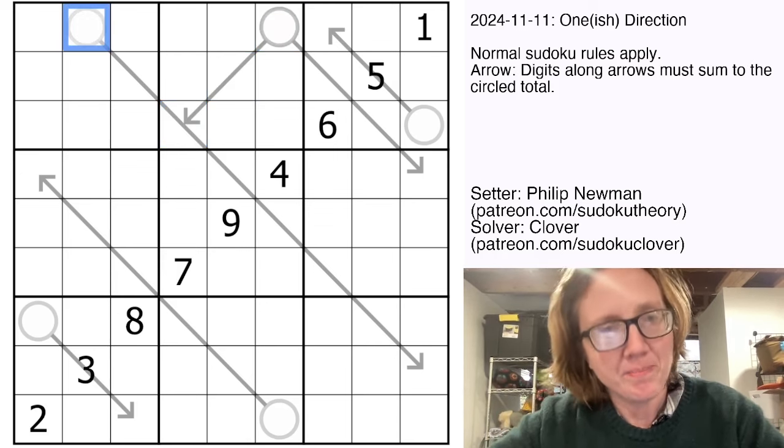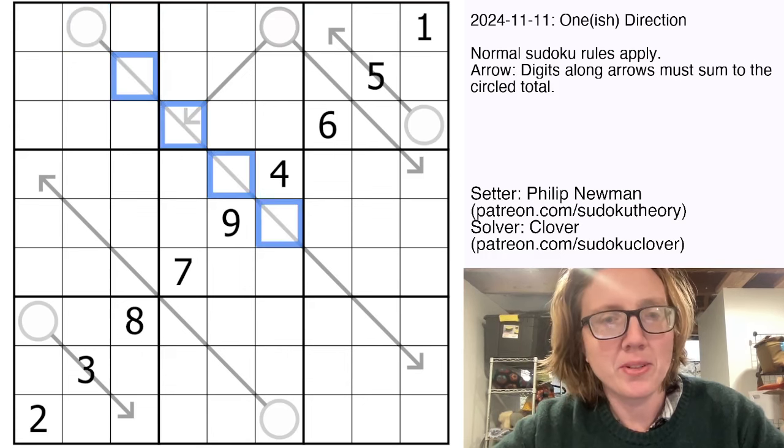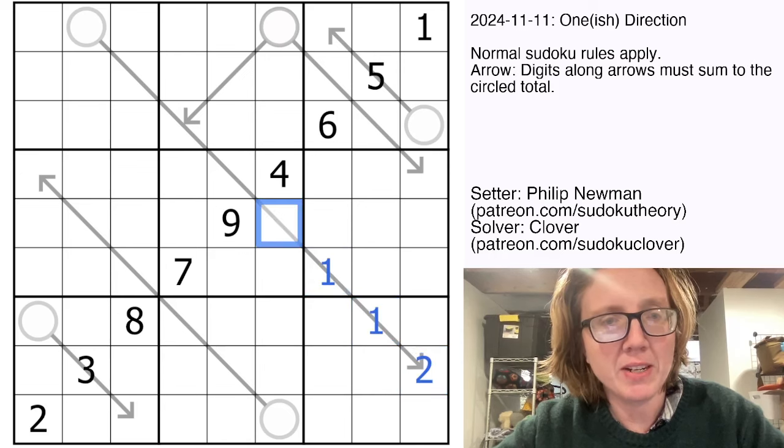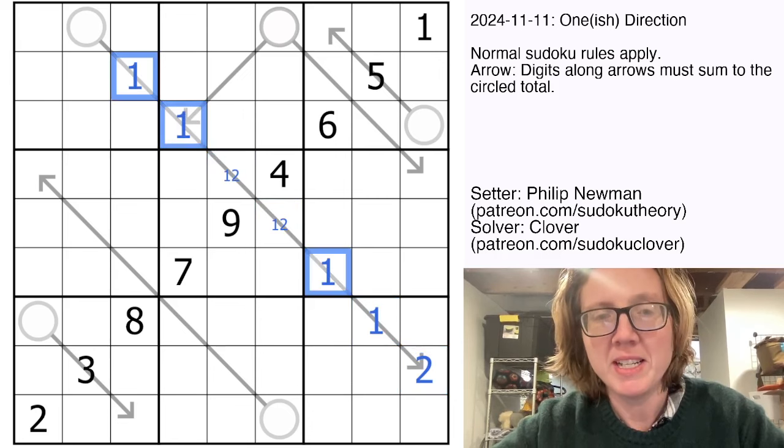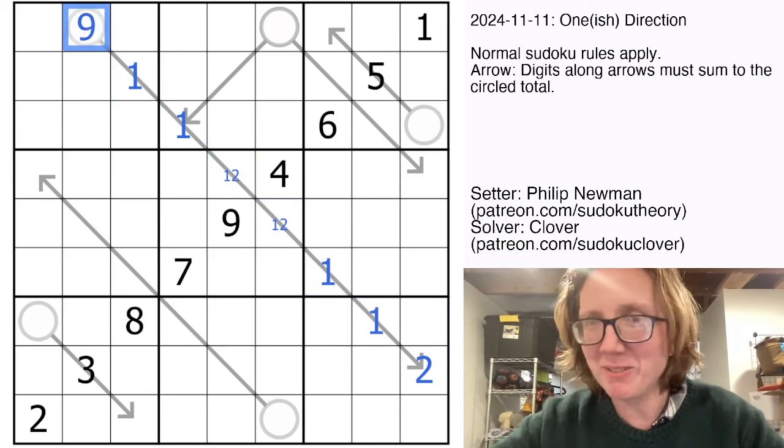So in this solve, we're going to start here, because the absolute lowest we can possibly make the total along this very long arrow is going to be nine. We can only put one and two there, one there, one and two there, one there, and one there. One plus one plus one plus three plus three is nine.